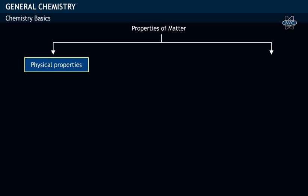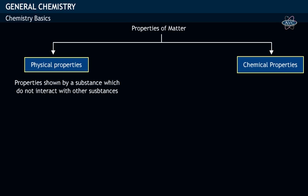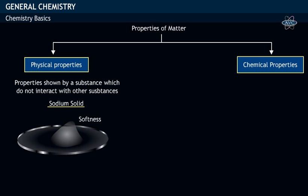Physical properties and chemical properties. The properties shown by solid which don't interact with other substances are called physical properties. For example, softness of solid sodium, its white color, and melting point of solid are few examples of physical properties.